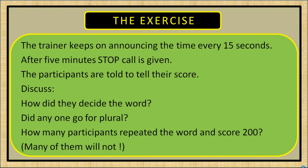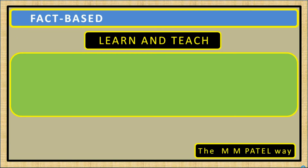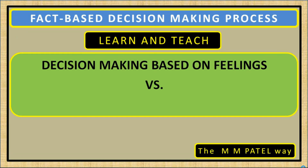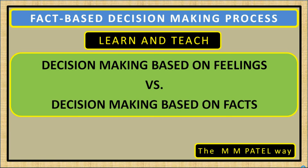Fact-based decision making process — let us revisit the learning. There are 2 ways of taking a decision: decision based on feelings and decision based on facts. Similarly, there are 2 methods of execution: we execute based on feelings and we execute based on facts. The participants who scored 200 straightaway, by selecting the proper word, planned and executed on the basis of facts.